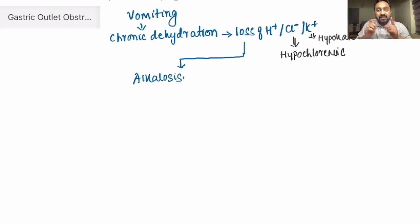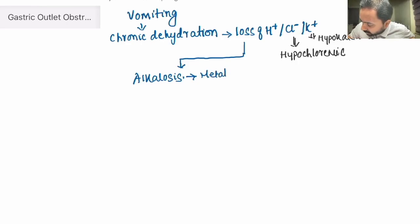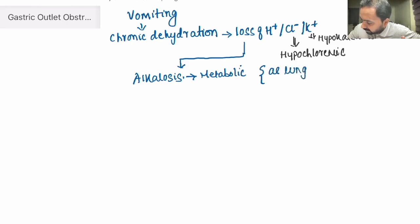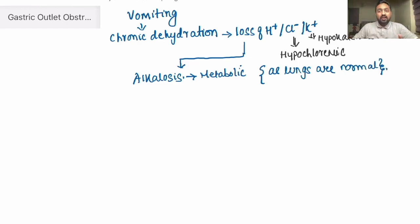Now, because of this loss of H+ ions, it leads to a state of alkalosis — specifically a metabolic alkalosis. Why is this a metabolic alkalosis? Because the lungs are normal. So this is a case of metabolic alkalosis, as the lungs are not involved.